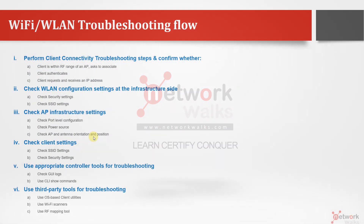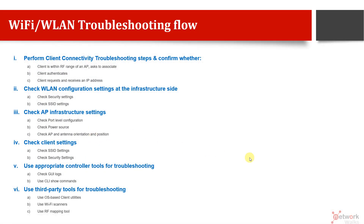How to troubleshoot the Wi-Fi network — the wireless LAN network — and how to solve problems whenever we face any issue with our home Wi-Fi or office Wi-Fi. This is the troubleshooting flow we should follow: six steps and some further sub-steps to solve our problem, in addition to the previously shared methods, which I'll also revise.